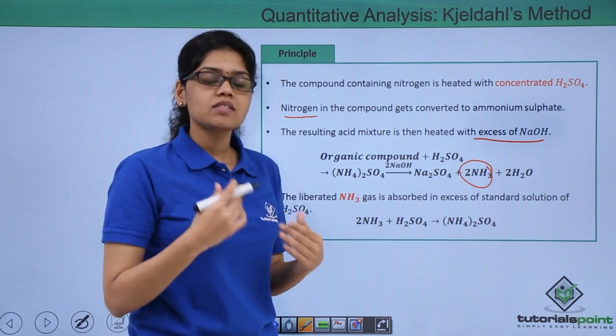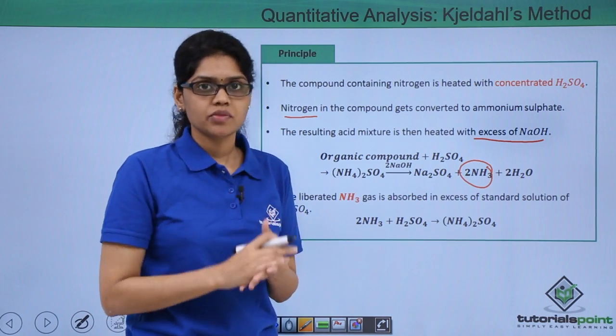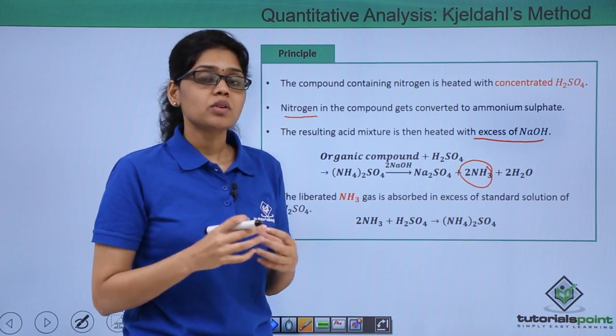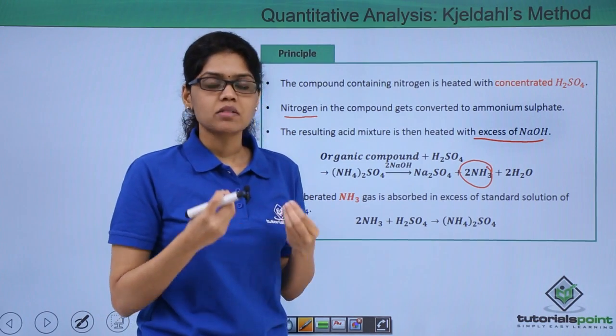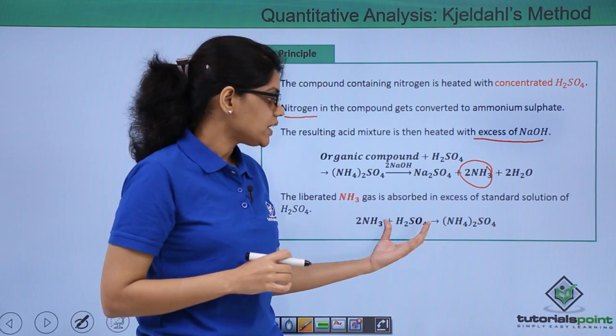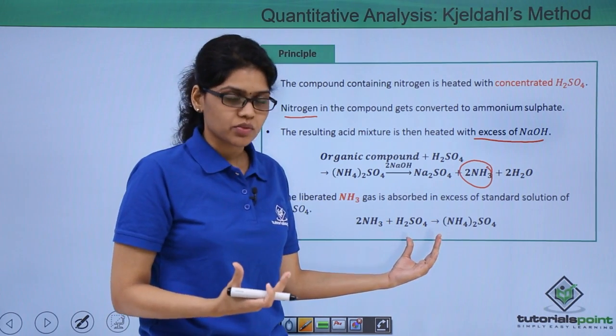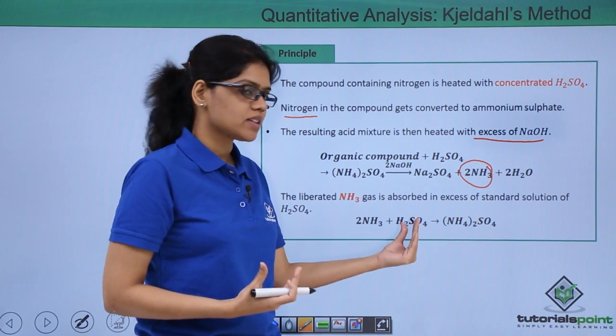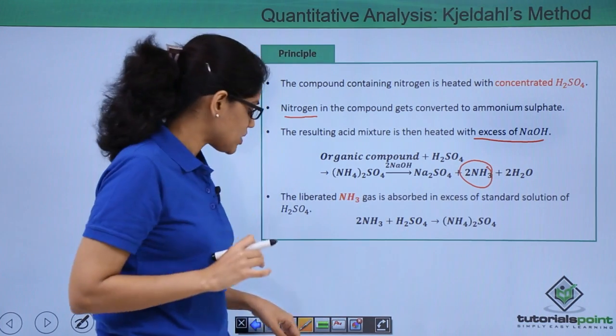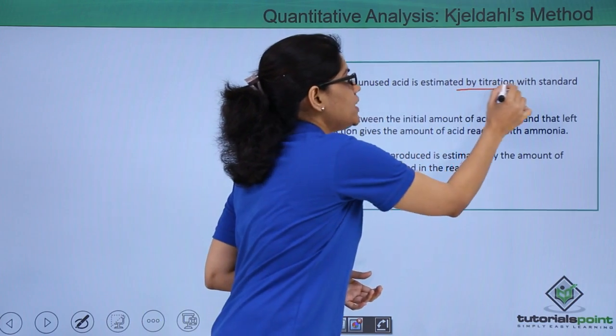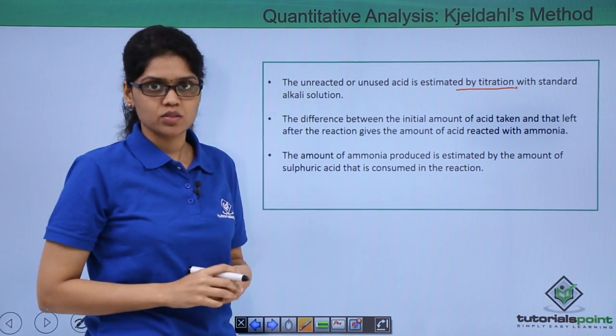This liberated ammonia is treated with excess standard sulphuric acid. We do not know how much ammonia is evolved because we do not know how much nitrogen is present in our organic compound. So we take an approximate amount of H2SO4, and once the entire ammonia has reacted, the remaining acid is estimated by titration with standard alkali solution.